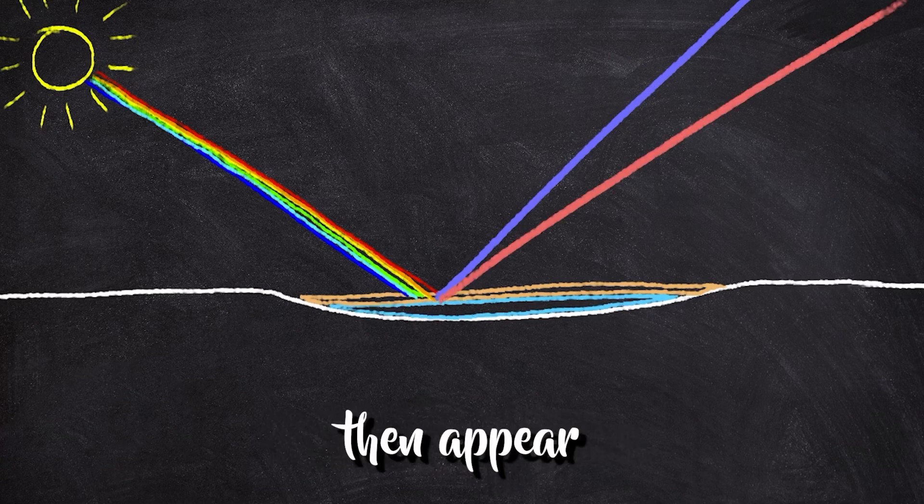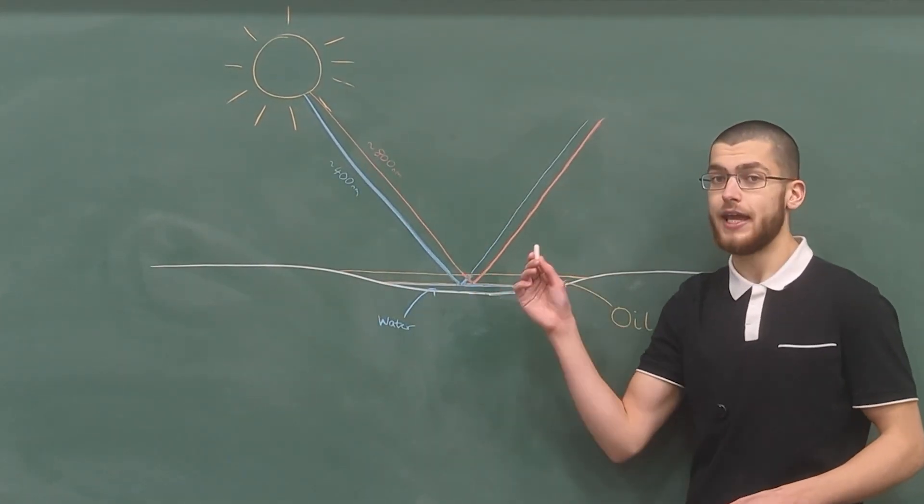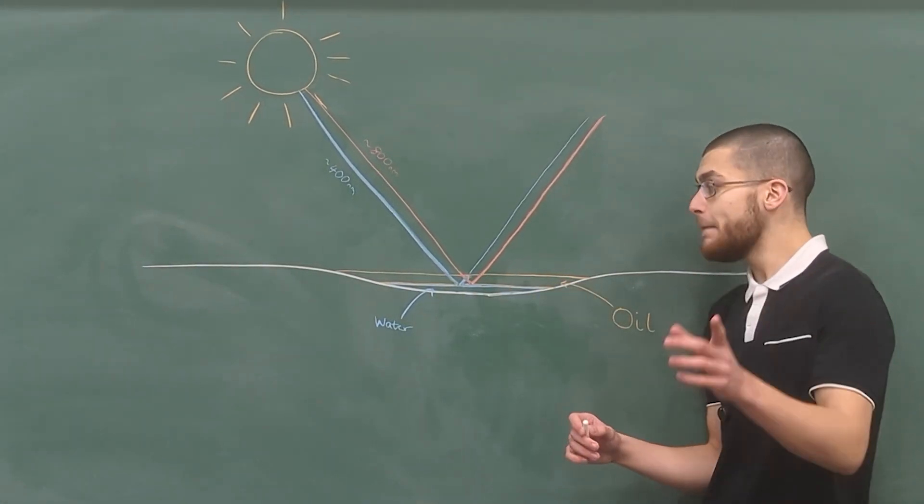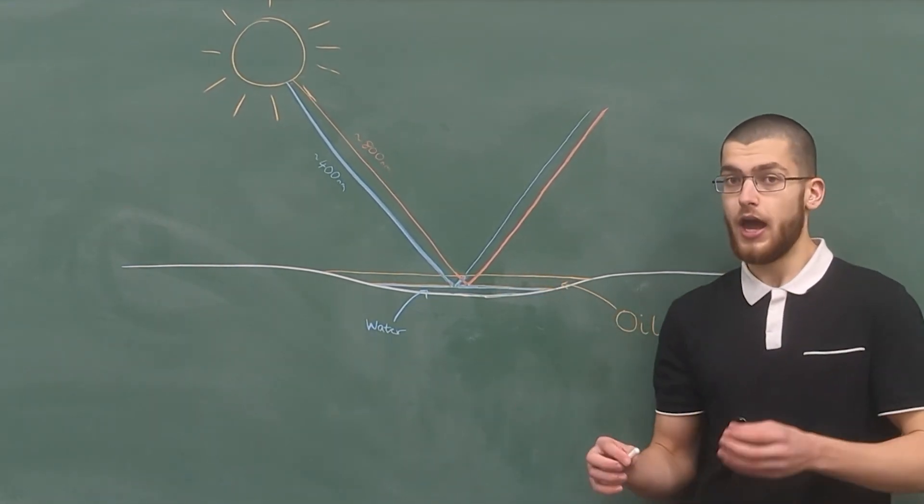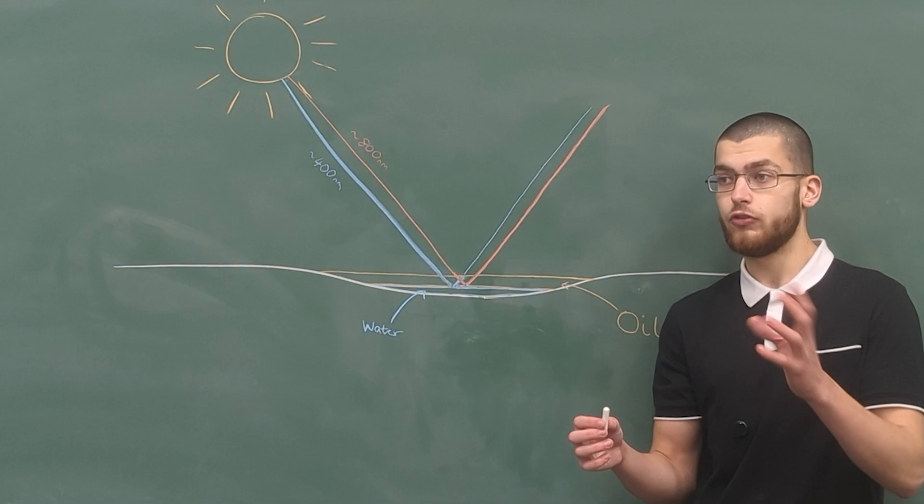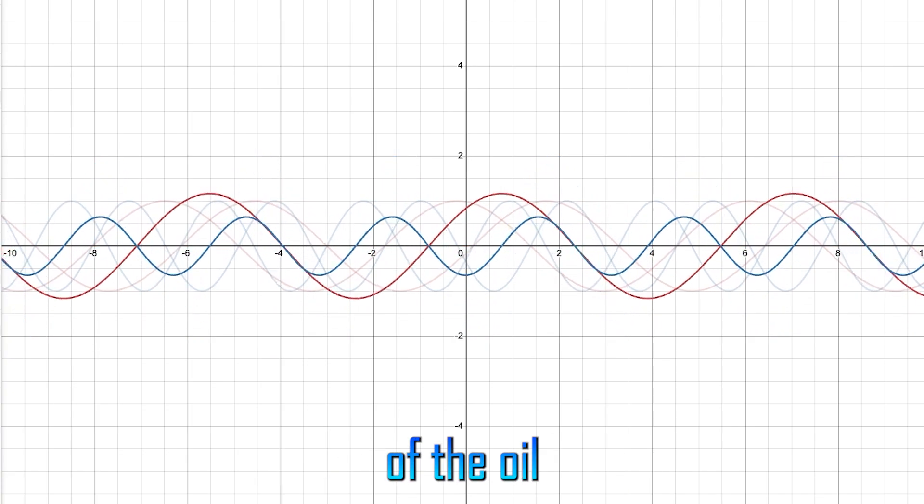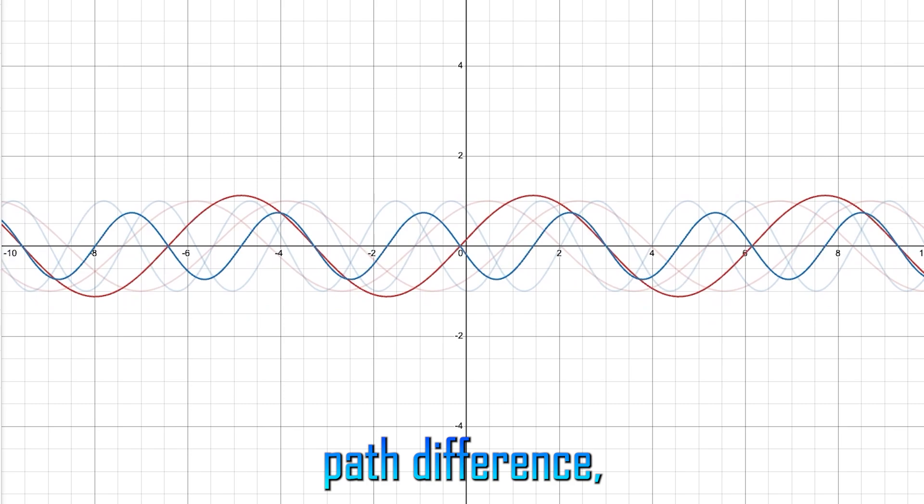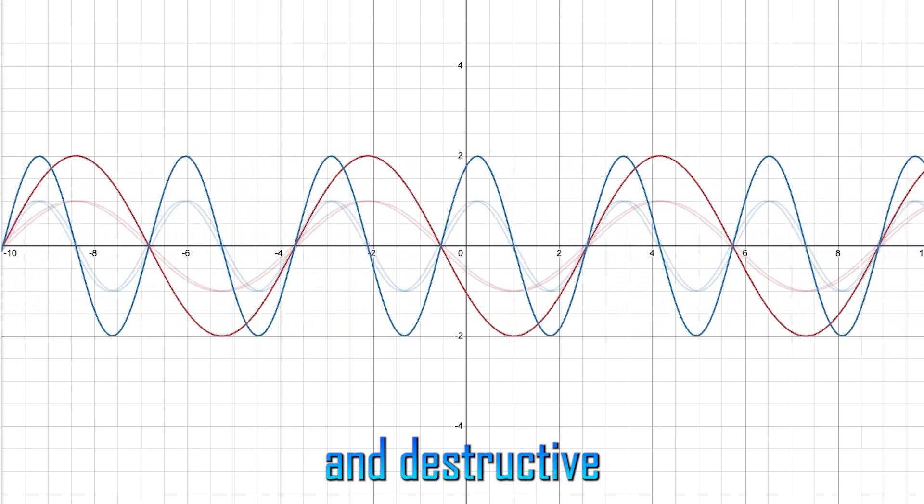So why does the puddle then appear like a rainbow? Well, if I change the wavelength of light that hits the puddle, then I change the amplitude of the light that is reflected back. So specific colors or wavelengths are reflected in different ways. Some get brighter, and some get darker. But when I change the thickness of the oil, or the path difference, this changes which colors undergo constructive and destructive interference.